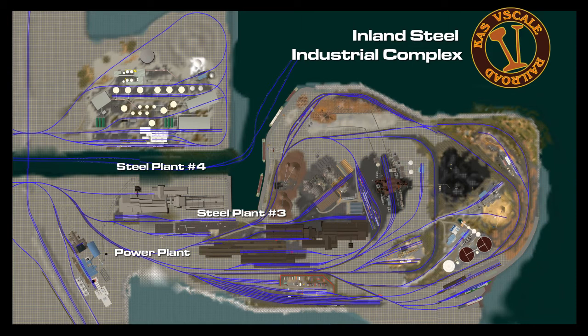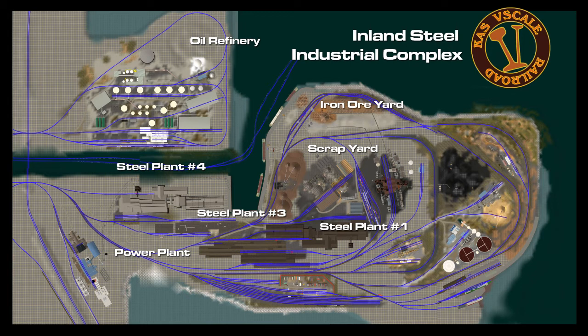Above that is steel plant number four. And above that is the ore refinery, which will handle all the fuels needed for everywhere on the layout. Coming back down at the top is the iron ore yard. Below that is the scrap yard, which will get scrap from all the different plants and process them. Then below that is steel plant number one, and below that is steel plant number two. Below that is the intermodal yard, which interacts with the inland rail ferry, so containers can come in and out through that port.